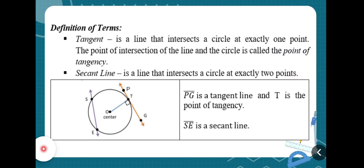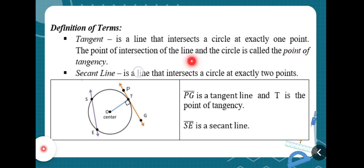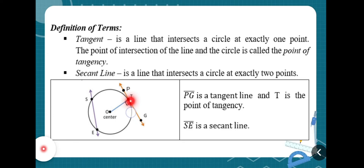Before we proceed to those theorems, let's define first what is a tangent and a secant. A tangent is a line that intersects a circle at exactly one point. The point of intersection of the line and the circle is called the point of tangency. As you can see in this figure, the tangent line is line PG, and the point of tangency is point T.